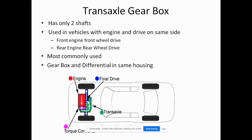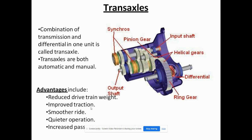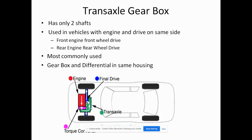Next we are going to the transaxle gearbox. In the transaxle gearbox, it has two shafts and is used in vehicles with engines driving on the same side — that is front engine, front wheel drive or rear engine, rear wheel drive. The most commonly used gearbox is the transaxle gearbox, and the most important feature is that the gearbox and differential are in the same housing.